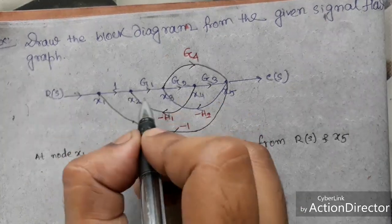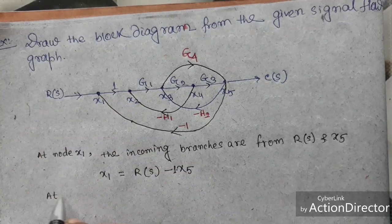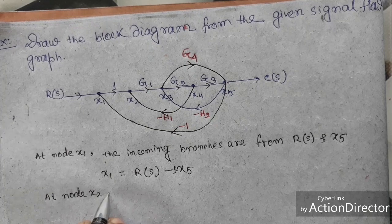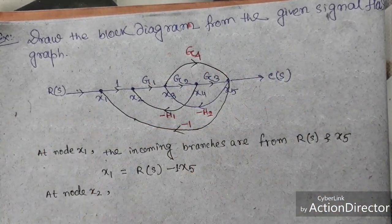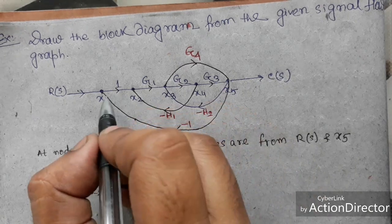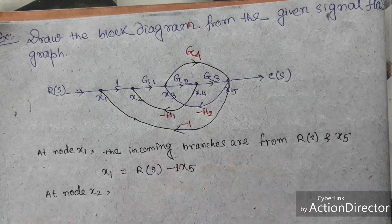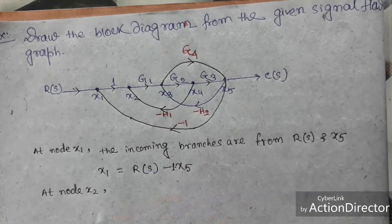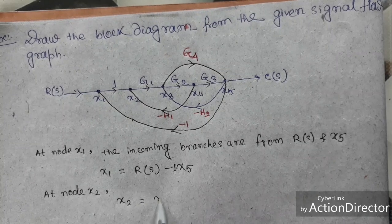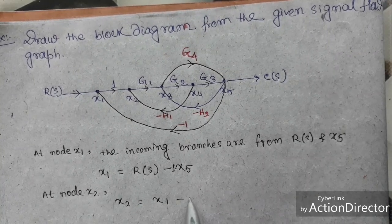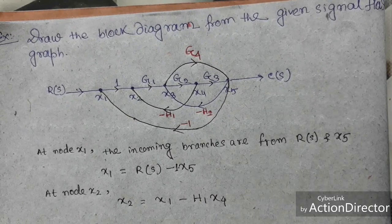Now we go to node x2. At node x2 there are two incoming branches: x1, and x4 with gain −h1. So we can write: x2 = x1 − h1·x4.